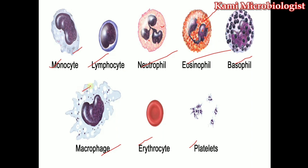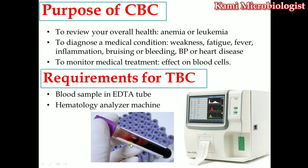Then we have macrophages, which are actually monocytes when present in the tissue. We have erythrocytes, or red blood cells, which have a biconcave shape. We have platelets, which are very small cells — their size is much smaller compared to erythrocytes and white blood cells. White blood cells are larger cells compared to erythrocytes and platelets. Platelets are the smallest cells.